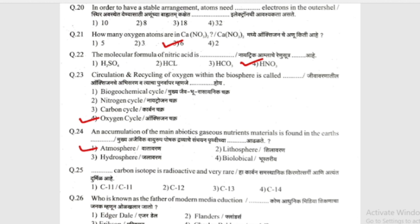The next question: which carbon isotope is radioactive and very rare? The options are C11, C12, C13, and C14. The answer is C14, which is radioactive and very rare.